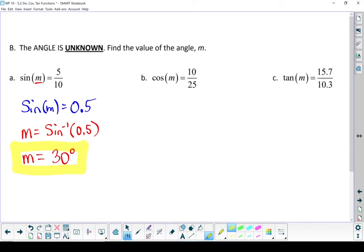Let's do the next one. It's cos. It works the exact same way. Start by dividing that fraction. 10 divided by 25 gives me 0.4. So cos of m equals 0.4. So I'm going to do the inverse cos of 0.4. m equals cos to the negative 1 of 0.4. Run that through my calculator. Inverse cos of 0.4 is going to give me 66.4 degrees.